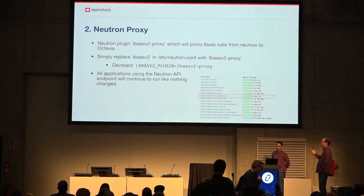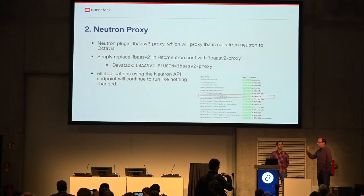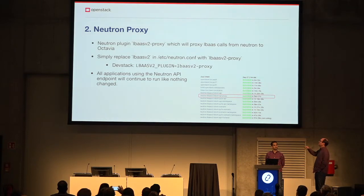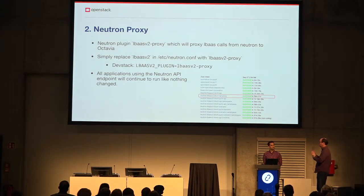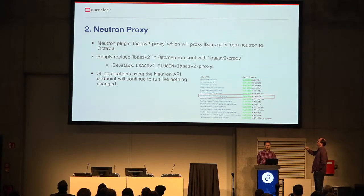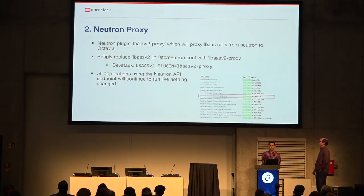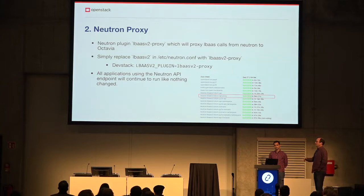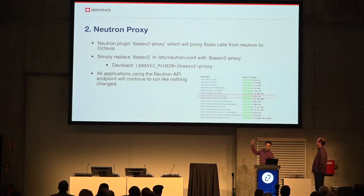One of the migration tools — if you are still running Neutron — is to install the Neutron proxy plugin, which replaces the LBaaS v2 plugin. The proxy plugin takes a Neutron request, receives it from Neutron, and sends it over to Octavia. It's very simple to switch on: just search in your Neutron configuration file for LBaaS v2 and put '-proxy' behind it, and it will use the proxy driver. All applications which go to Neutron will work as before, but instead of going to Neutron LBaaS, they will be proxied over to Octavia. We also test it on our CI.